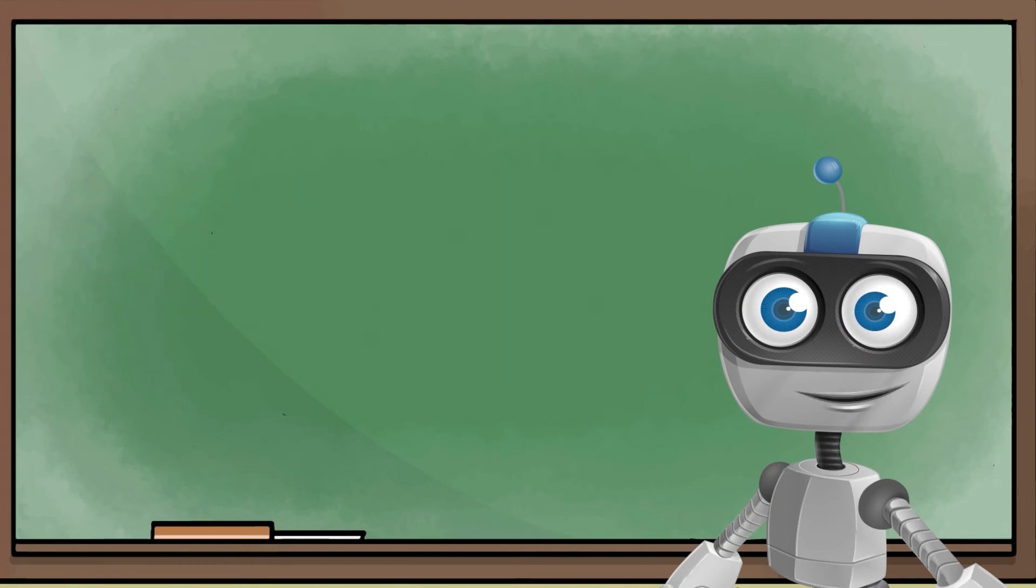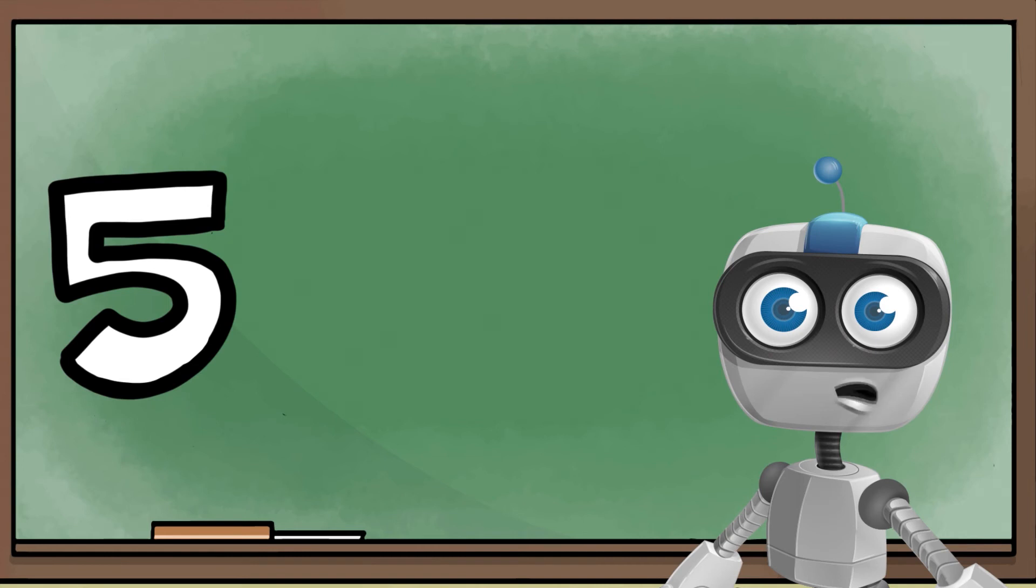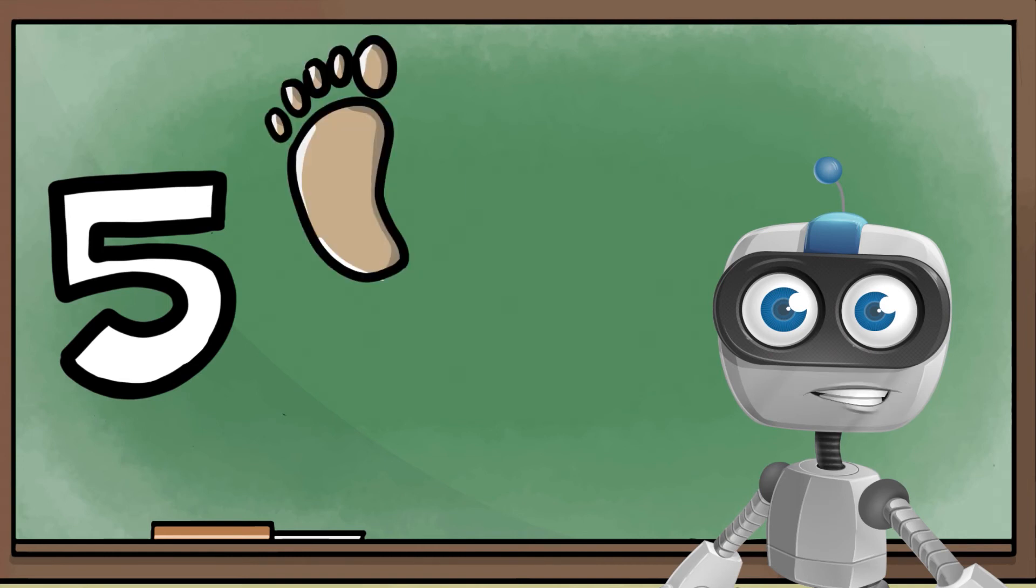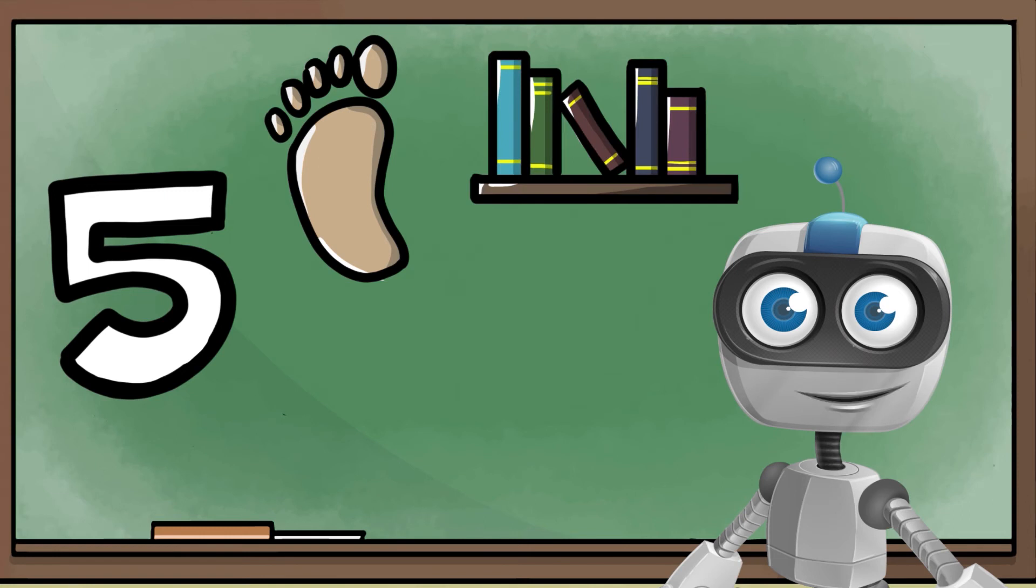Wow! There are so many ways I can make five. Five, no matter how I draw it, this symbol always shows five. Five toes on my foot, five books on a shelf, five apples on the table. Can you think of any other ways?